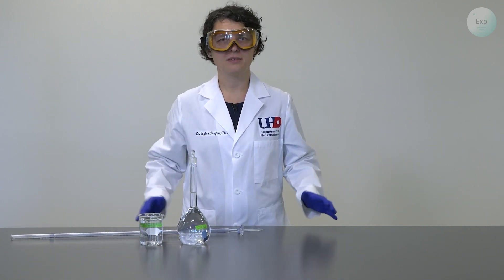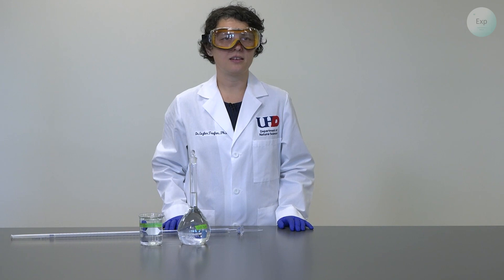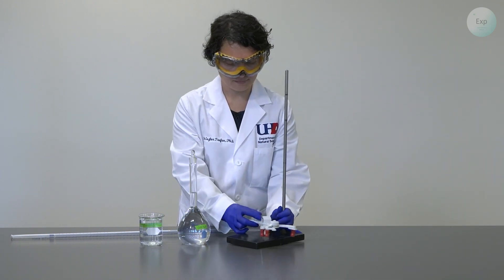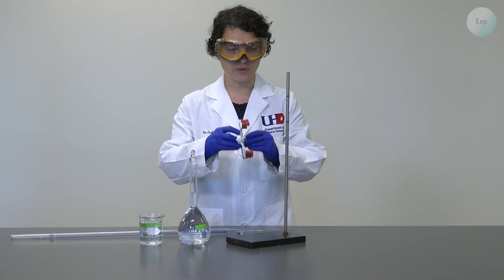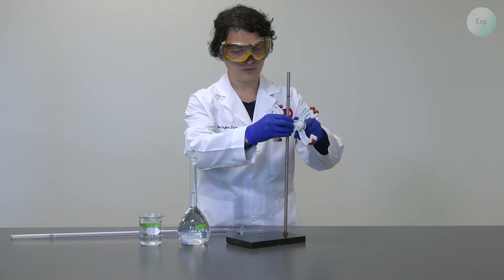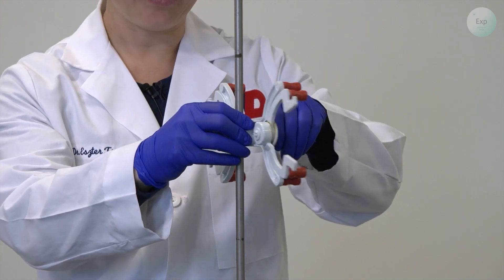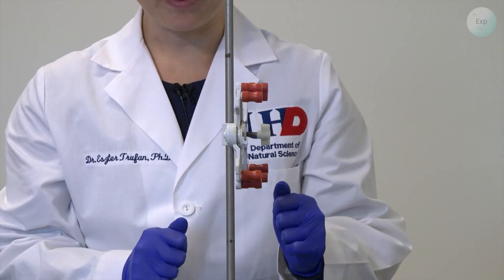To suspend the burette, we are going to need a stand and a burette holder. And this is usually how it works. The burette holder will slide right into the stand and then we tighten it so that it stays in place.